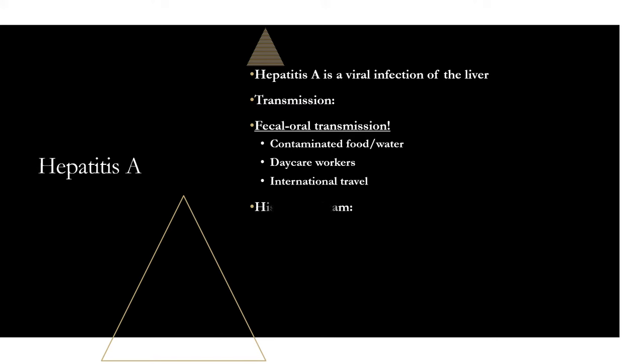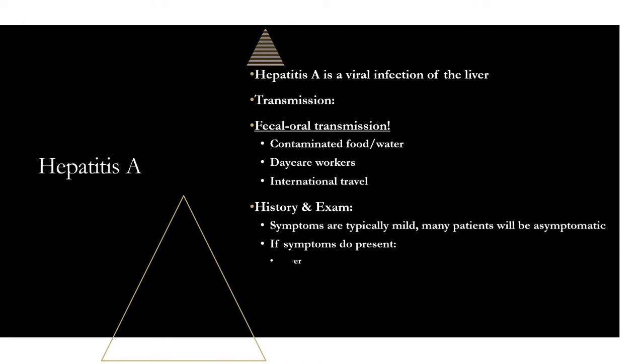For history and exam with hepatitis A, symptoms are typically mild and many patients can be asymptomatic. If they do develop symptoms, it's going to be fever, nausea, vomiting, and general malaise — nothing specific that says this is hepatitis A. On exam, hepatomegaly, jaundice, and right upper quadrant tenderness are going to be seen, but these are seen in all hepatitis types.